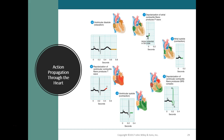Conduction of the action potential slows at the AV node because the fibers there have smaller diameters and fewer gap junctions — much like merging four lanes of traffic down into one, which slows everything down. After that delay, the action potential propagates rapidly again after entering the AV bundle, progressing down the interventricular septum and upward from the apex, producing the large QRS complex as the ventricles depolarize. Atrial repolarization is occurring at the same time but is not visible on the ECG because it is masked by the much larger QRS complex.